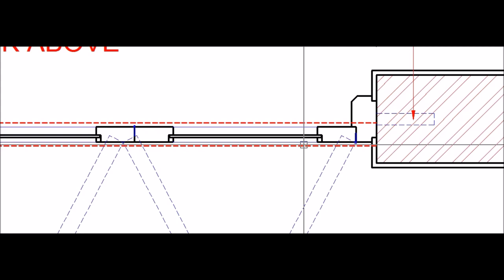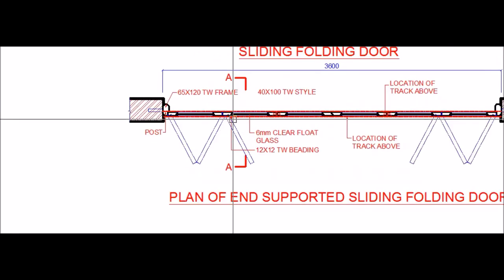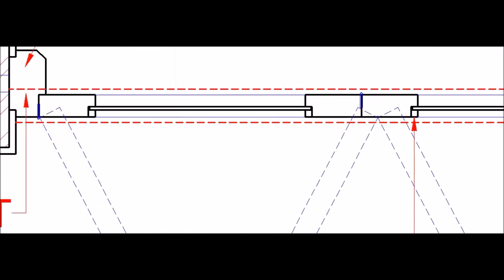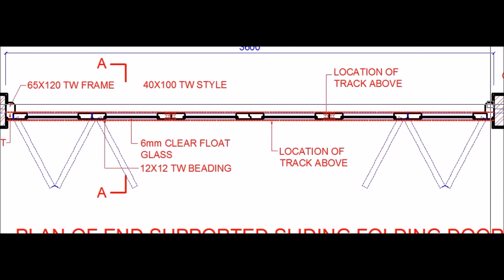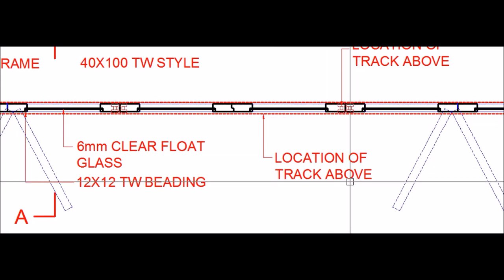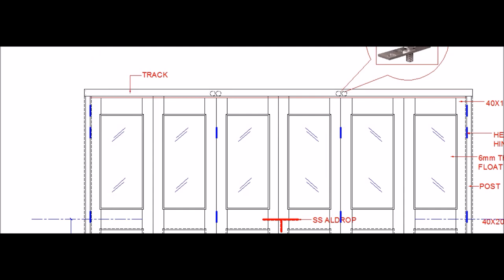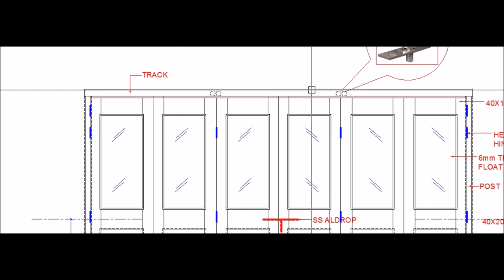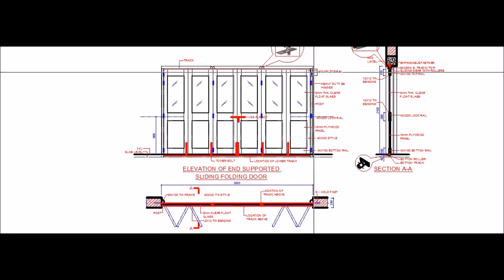The shutters of this sliding folding door are hinged to the post on either side. There are two dotted lines on two sides of the door shutter, indicating the track of the door which is above the door, just below the lintel. These two dotted lines indicate the location of the track above the door, which can also be seen in the elevation.